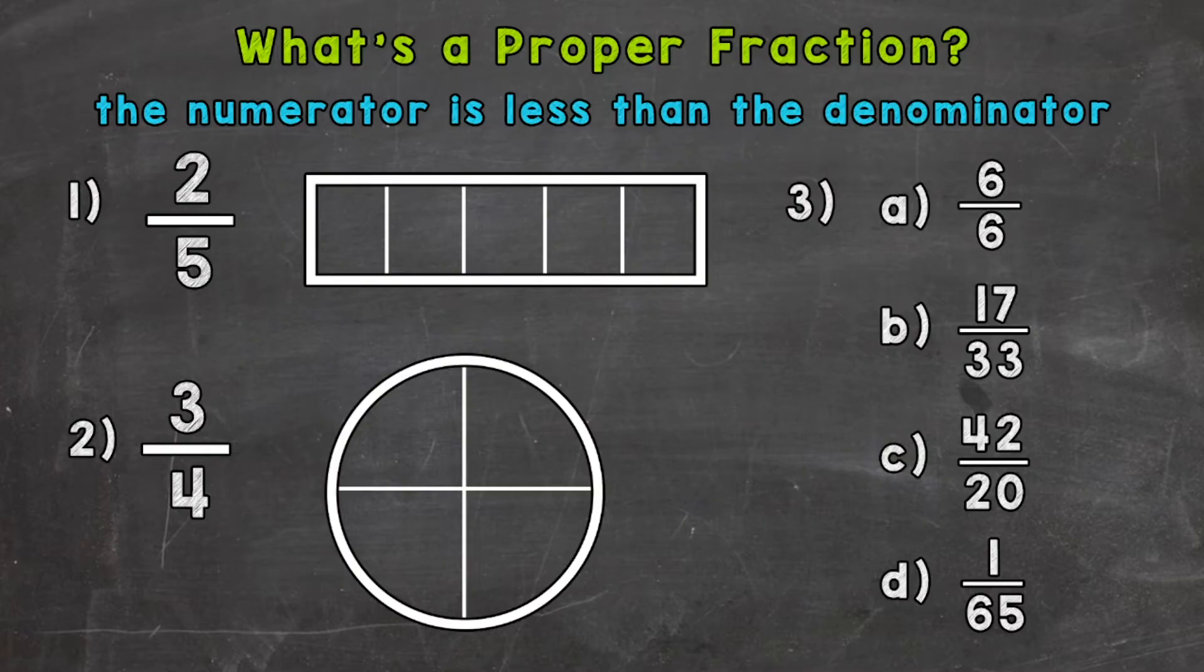Number one, we have two-fifths. So we can clearly see that the top number, the numerator, is less than the denominator. So this is a proper fraction.